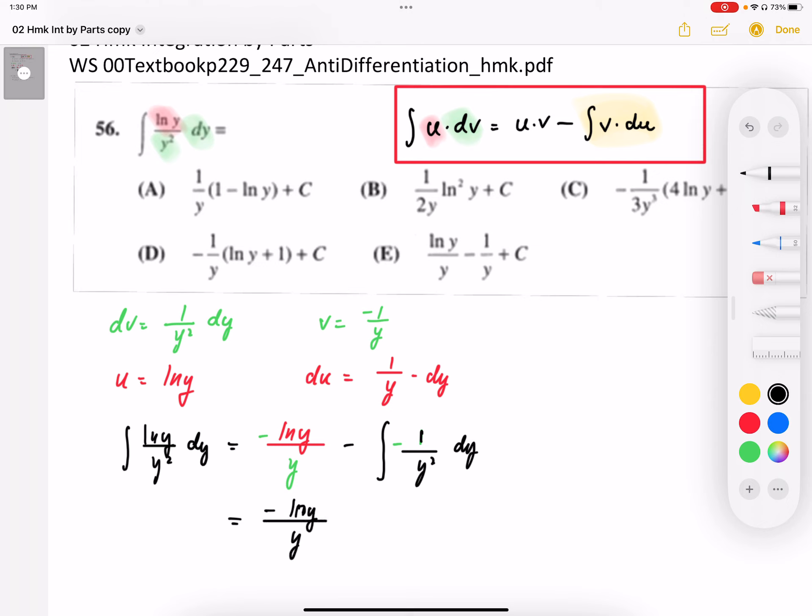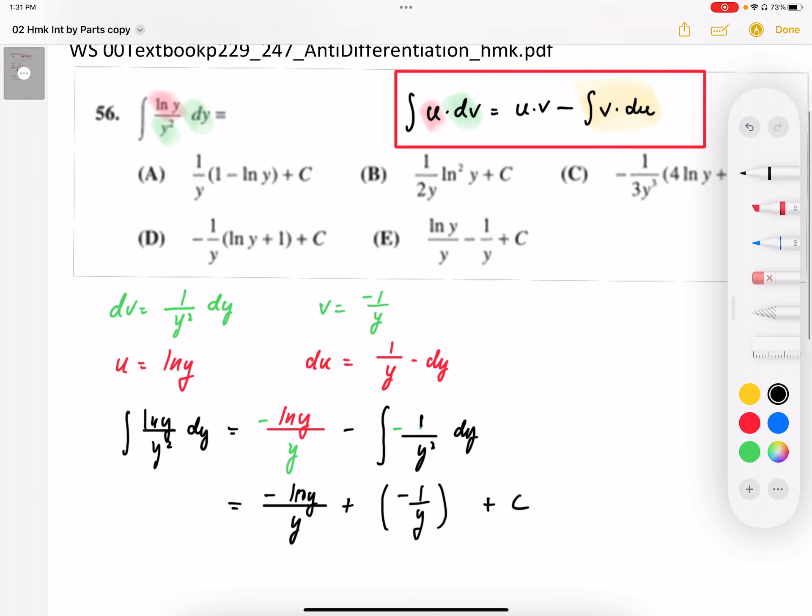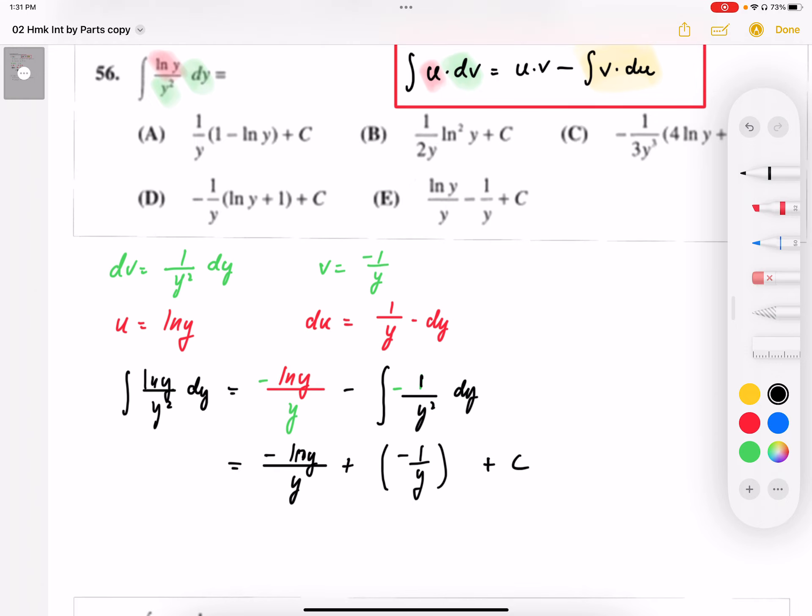Now this new integral we can anti-differentiate. In fact, we're going to anti-differentiate that expression into negative one over y. And so we've now anti-differentiated this expression. We need to make sure we add a plus C.